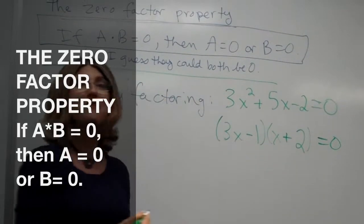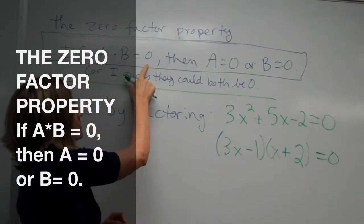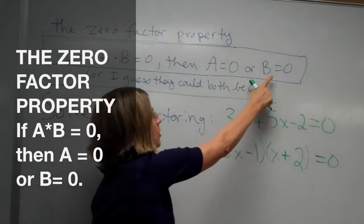So now let's use the zero factor property to solve this. We know that if A times B is 0, then either A is 0 or B is 0.